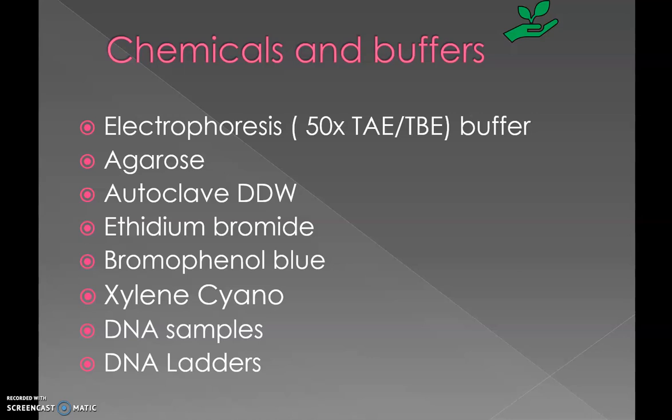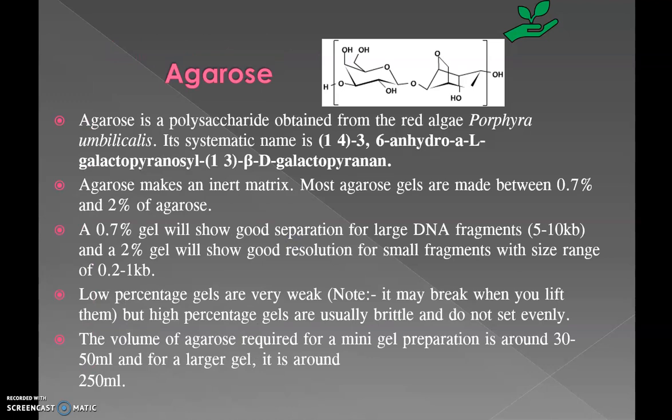Agarose is a polysaccharide obtained from the red alga Porphyra umbilicalis and makes an inert matrix. Most agarose gels are made between 0.7 to 2 percent agarose. A 0.7 percent gel will show good separation of large DNA fragments like 5 to 10 kb, and a 2 percent gel will show good resolution for smaller fragments in the size range of 0.2 to 1 kb. Low percent gels are very weak and high percent gels are usually brittle and do not set evenly.